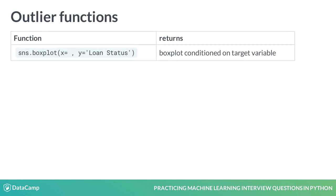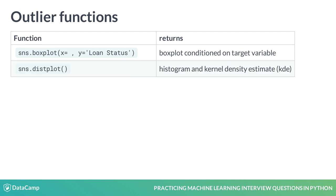Some of the functions you'll encounter in the exercises are from the Seaborn module, where the boxplot function used on our target variable loan status, supplied to Y, gives conditioned boxplots. Distplot gives a histogram with a KDE.